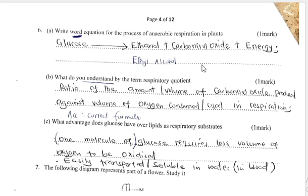Question 6a: Write a word equation for anaerobic respiration in plants. Glucose, in the absence of oxygen (or very little oxygen), is broken down — in the presence of respiratory enzymes — to produce ethanol, carbon dioxide, and energy.